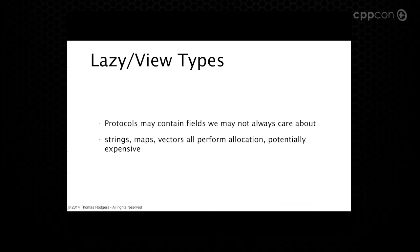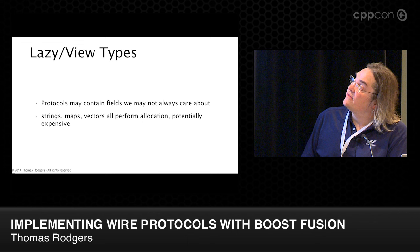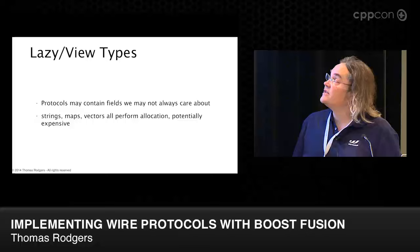It can be the case that we don't really care about everything we're receiving, or we don't care about it right now and want to apply some filter criteria before spending time deserializing it. Strings and maps are particularly bad because they do a lot of allocation; vectors also allocate, and in our business this is something we look for ways to avoid.